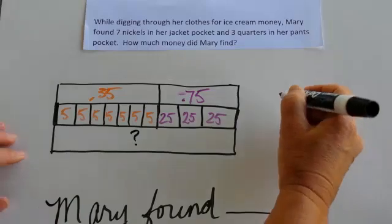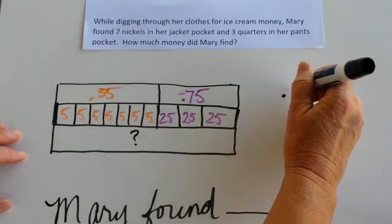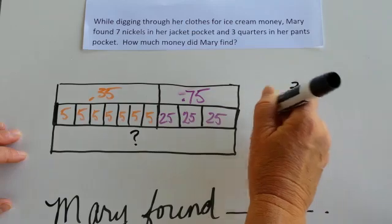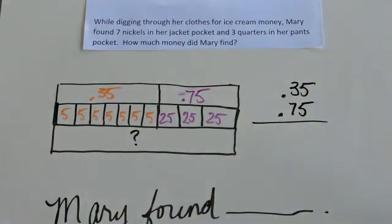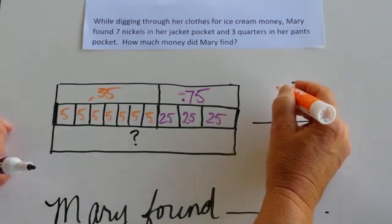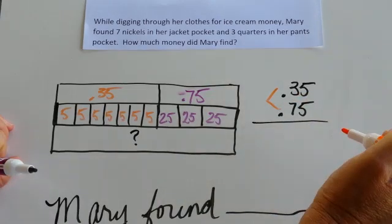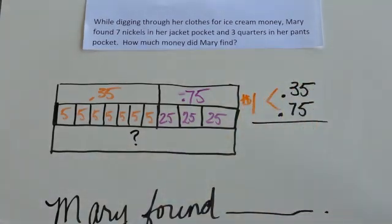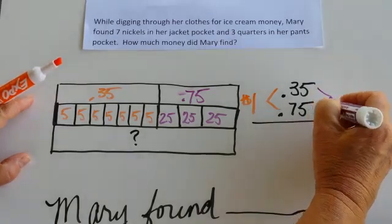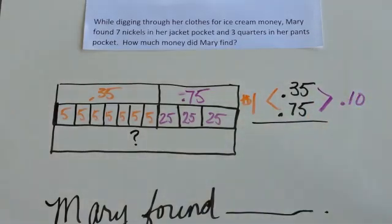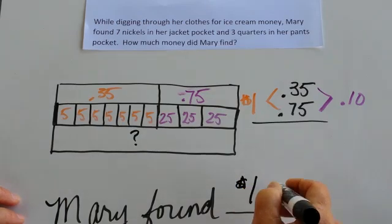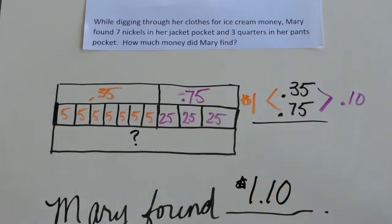Now it's time to compute. You're welcome to do the math any way you like. The purpose of the model is to help you realize what kind of math we need to be doing. Today we're going to add these two together. If I had 30 cents and 70 cents, that would equal 100 cents, and 100 cents equals one dollar. Five cents and five cents equals ten cents. You can quickly see that Mary found one dollar and ten cents in her pockets. I wonder if that's enough for the ice cream store.